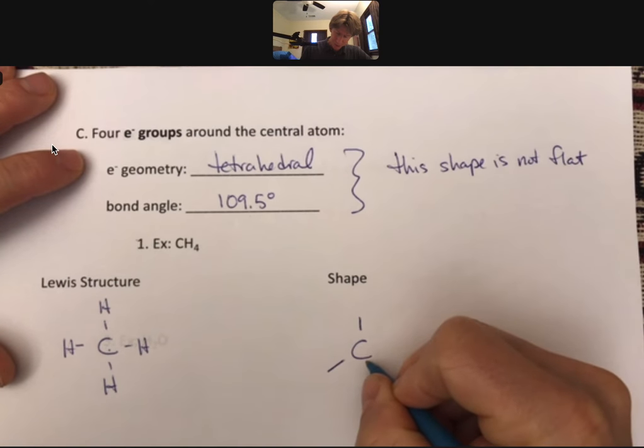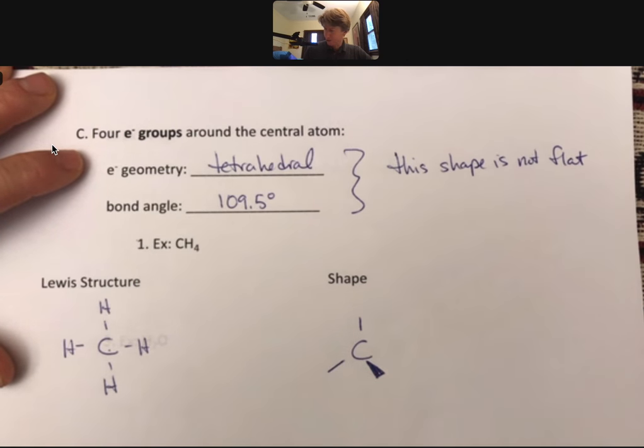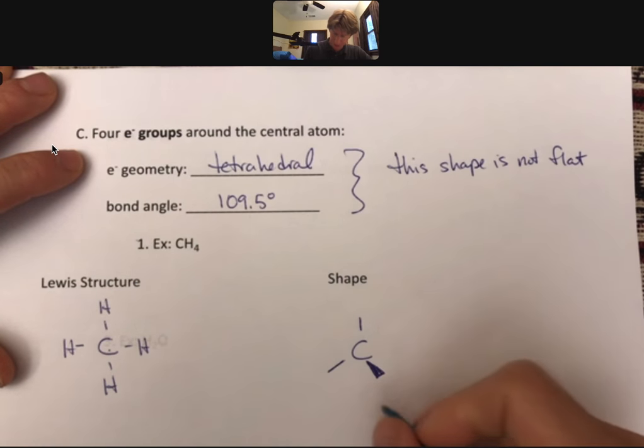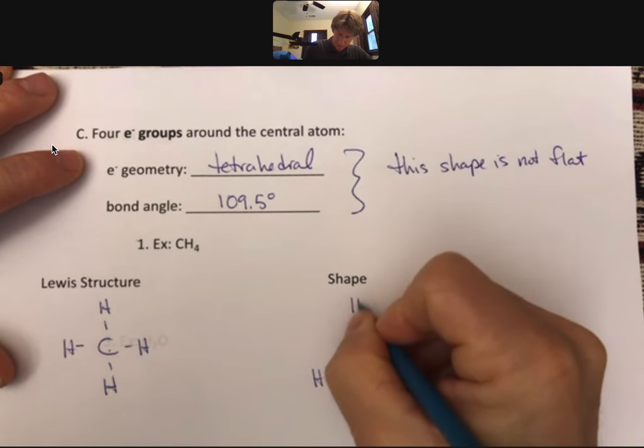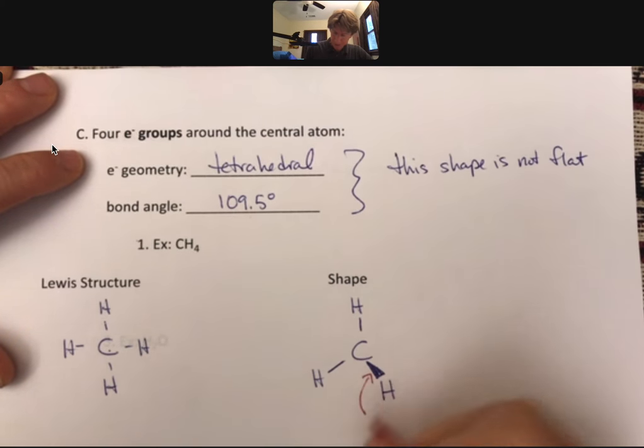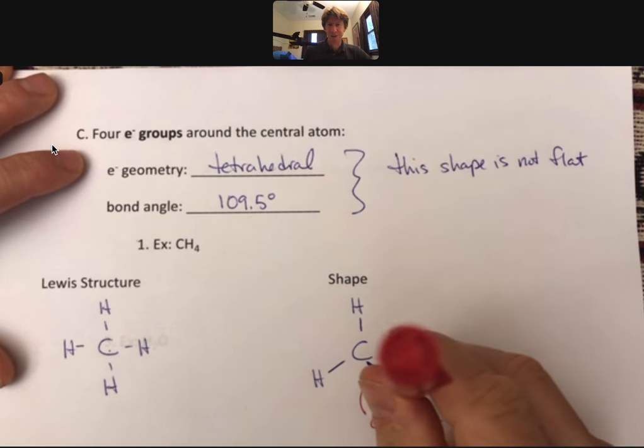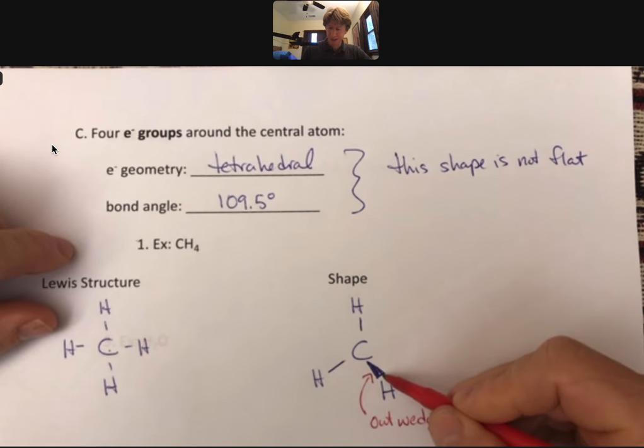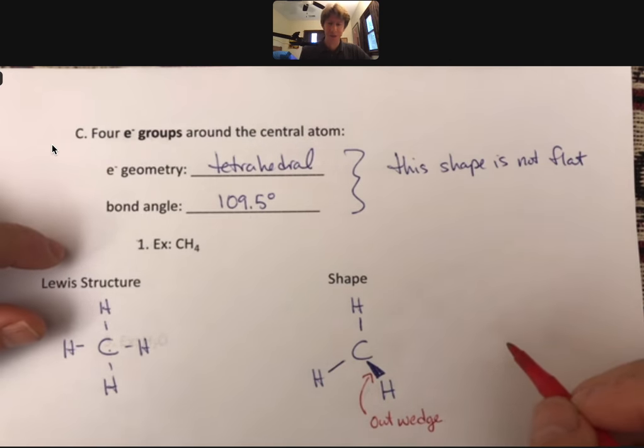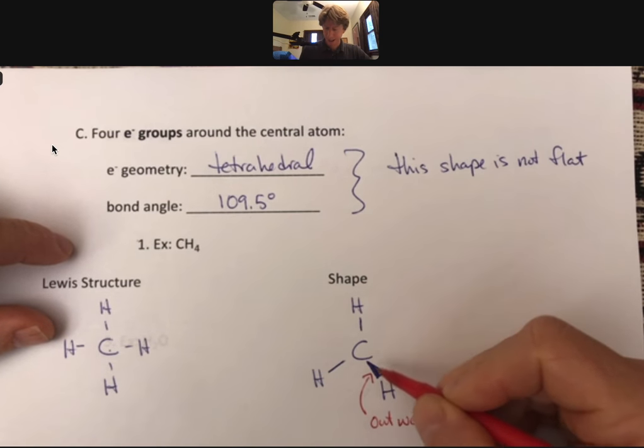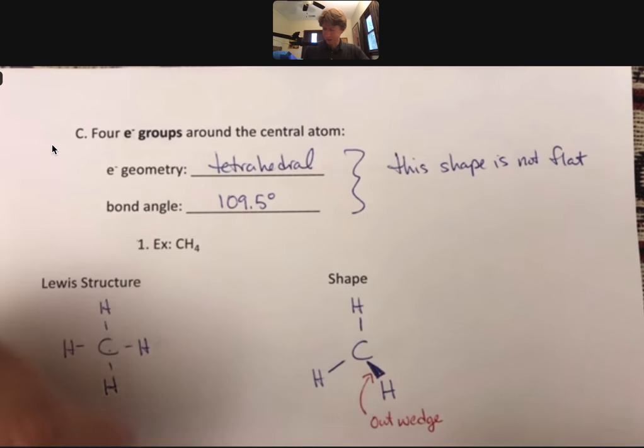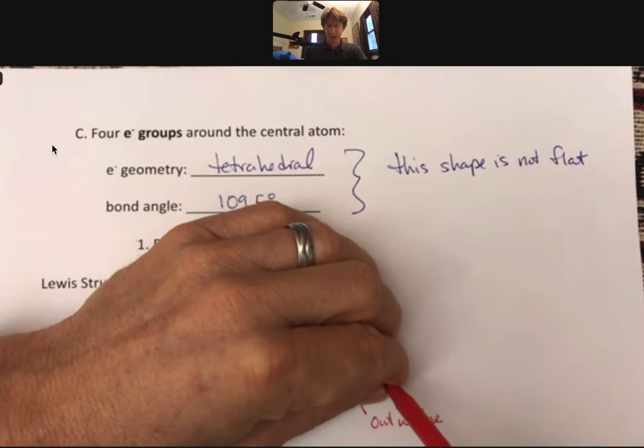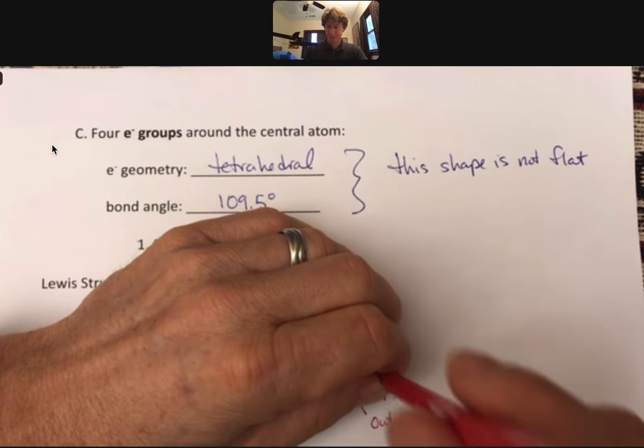But now there's going to be two other ones. This is what's called an out wedge. This is called an out wedge, and that's because it's coming out at you. You see how this pen gets slightly bigger as it comes towards you? This bond is getting slightly, it's an exaggerated perspective, it's getting bigger as it comes towards you and out of the page. So this H is actually sticking out like that, out of the page.